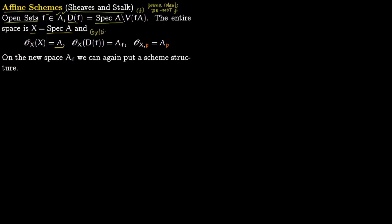So on the open set D(F) you put A(F), the localization of A at F. The open sets are precisely of the form D(F). The stalk at a prime ideal P is A localized at P — you take the original ring and localize it. This is how you put an affine scheme on any ring A. You start with ring A, construct the topological space X = Spec(A), put a structure sheaf on X, and that gives you a scheme.